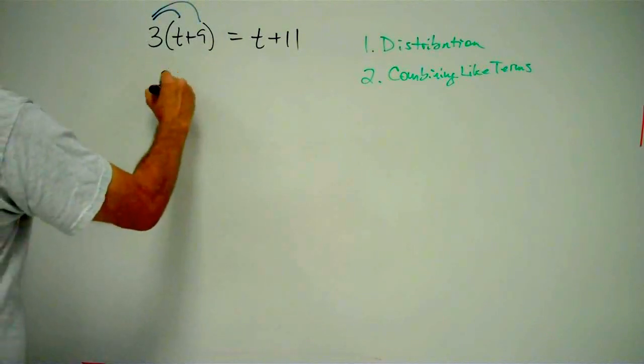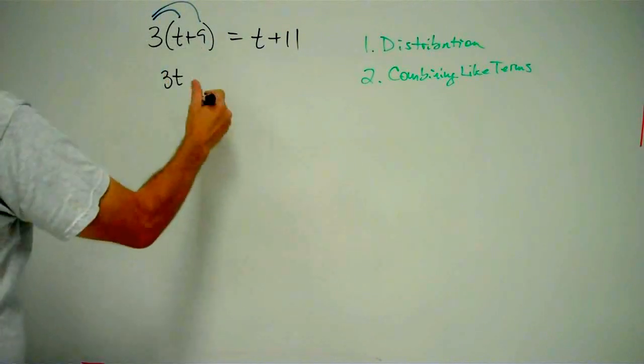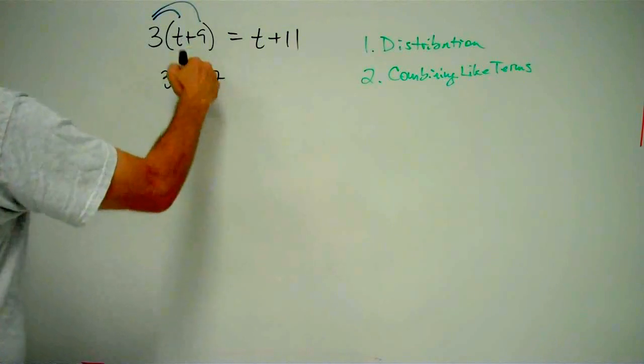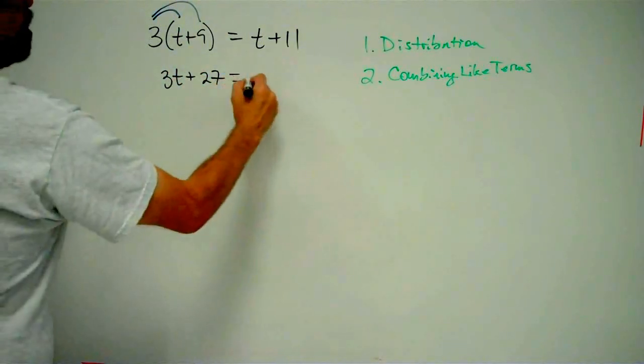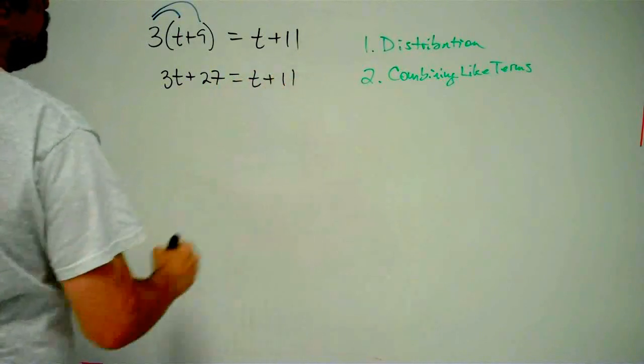3 times t is going to give us 3t. 3 times 9 is going to give us 27. We must keep that plus there. And that equals t plus 11. We'll keep that there.